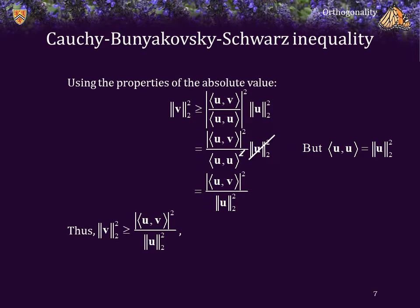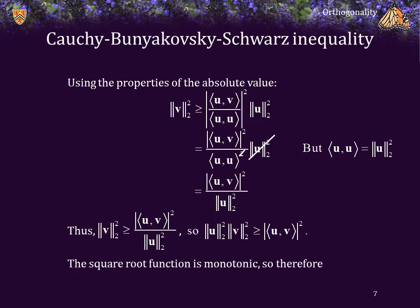The two-norm of v squared is greater than or equal to this ratio, and since u was assumed to be non-zero, we can multiply both sides by that two-norm. So, the two-norm of u squared times the two-norm of v squared is greater than or equal to the absolute value of the inner product of u and v all squared. Recall that the square root function is monotonic, so we can take the square root of both sides, and consequently the inequality is thus proved.